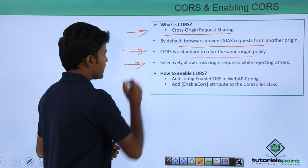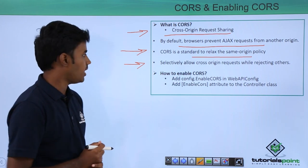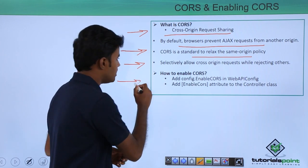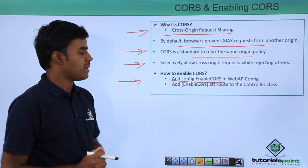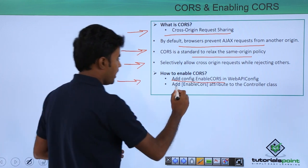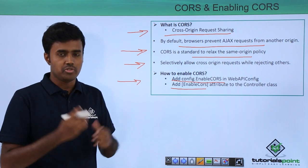This is a policy to selectively allow cross-origin request, and this is enabled by adding config.enableCORS in Web API config and EnableCORS attribute to the controller class where you need to enable CORS.